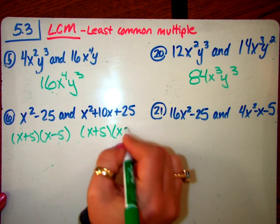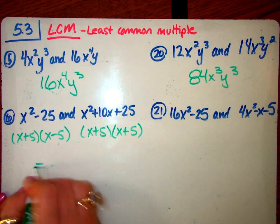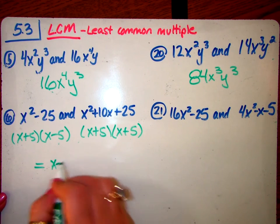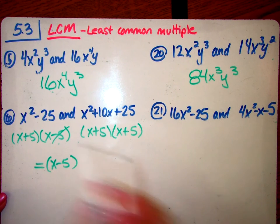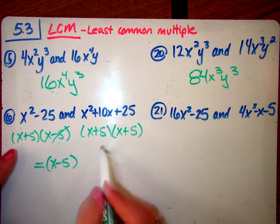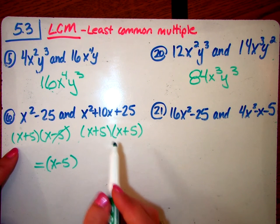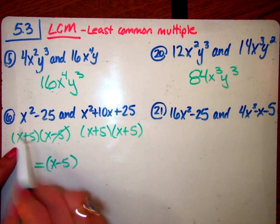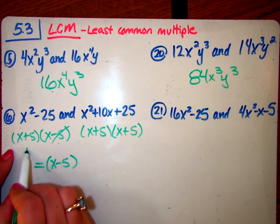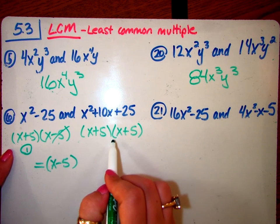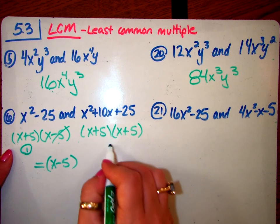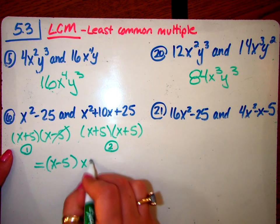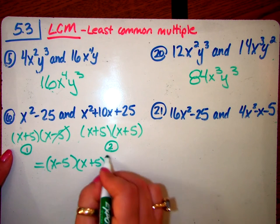So once all factored, you're going to write your least common multiple. So I kind of scan, and I say, x minus 5 happened once, take care of that. But x plus 5 happened three times, and this is how you know how many times to write it. You look individually, how many times on this side did it happen? Once. How many times on this polynomial did it happen? Twice. So you're going to take the higher number. So it's x plus 5, and you're going to square it, or you could just do x plus 5 and another x plus 5.